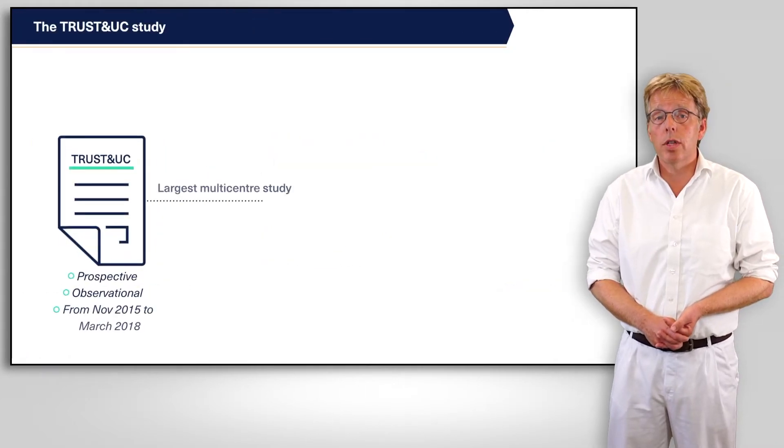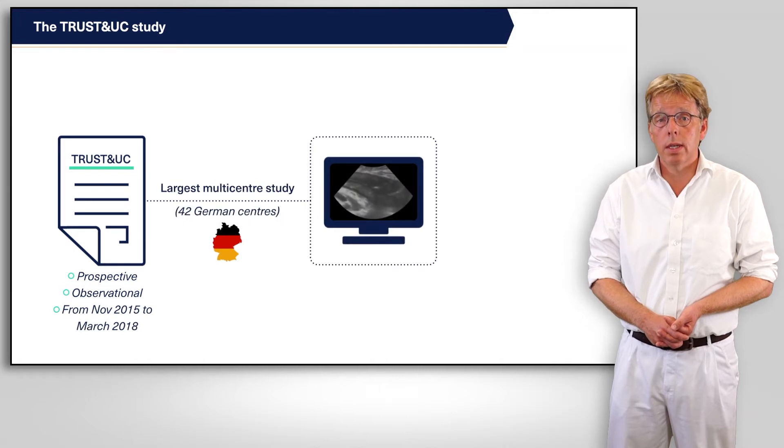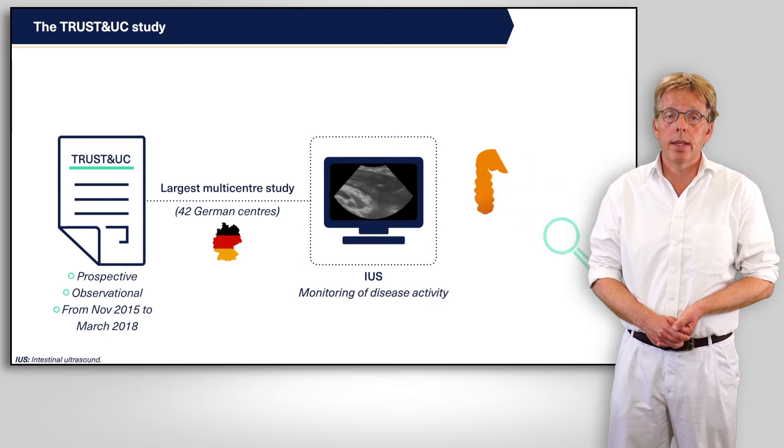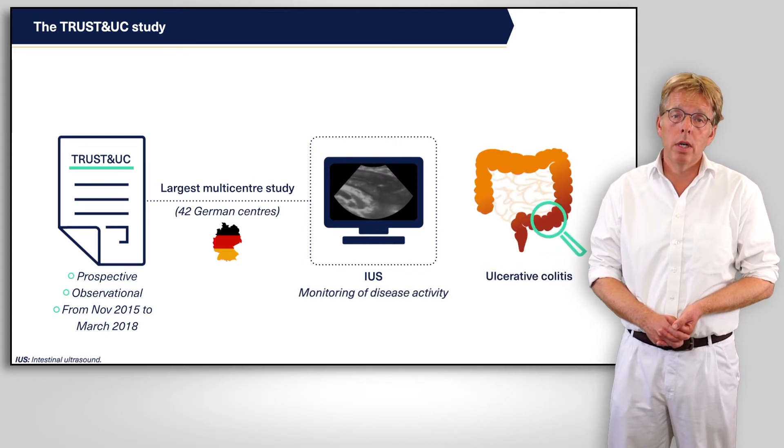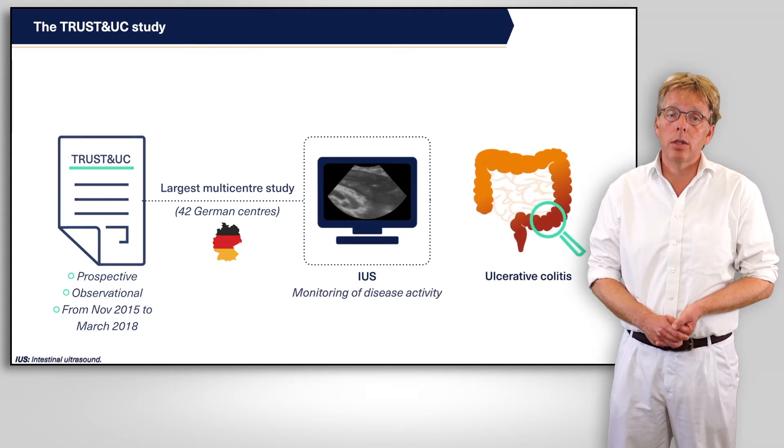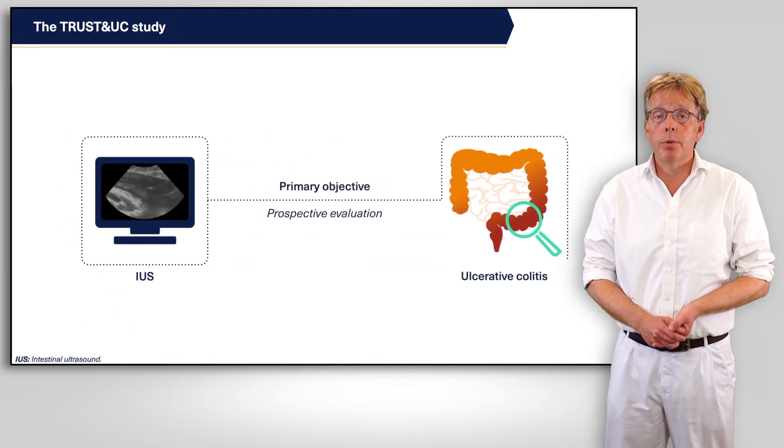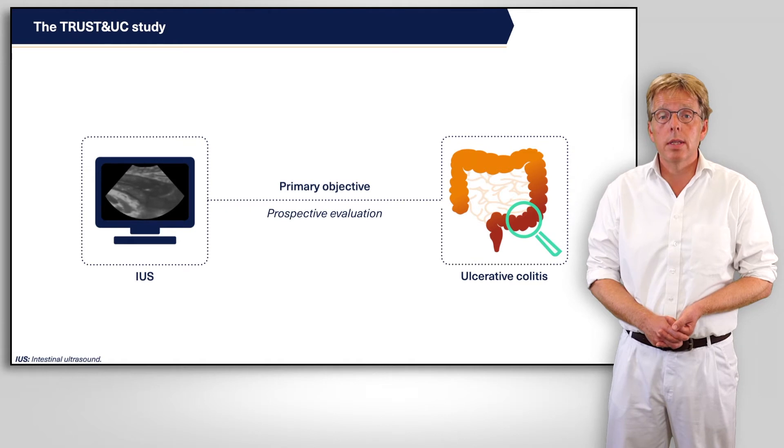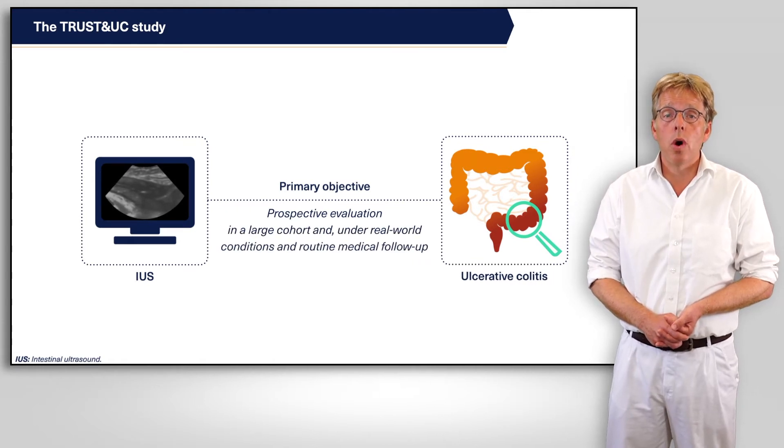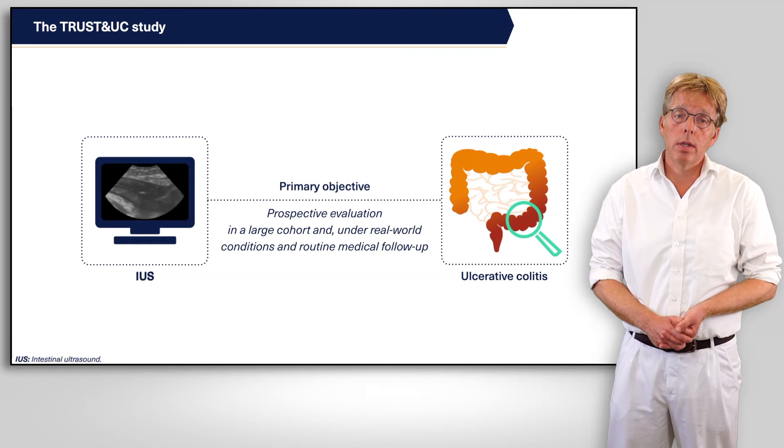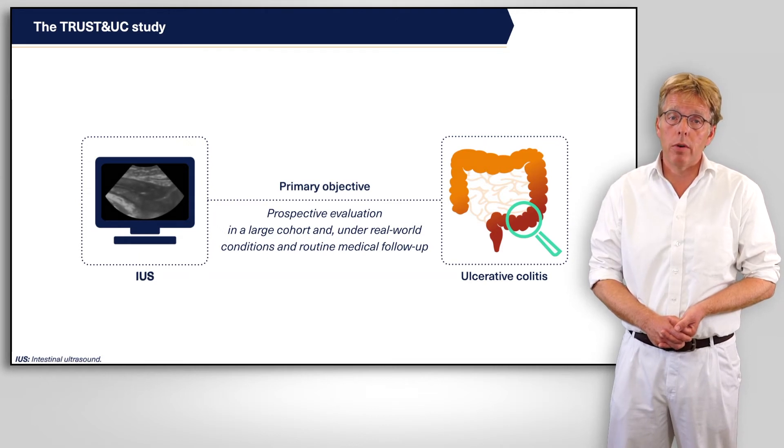TRUST UC is the largest prospective multi-center study with 42 participating German centers investigating the use of intestinal ultrasound to monitor disease activity in UC. The primary objective was the prospective evaluation of IUS in monitoring patients with UC in a large cohort under real-world conditions and routine medical follow-up.